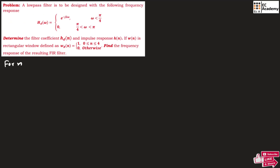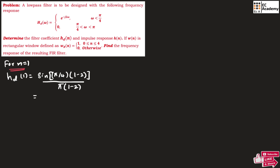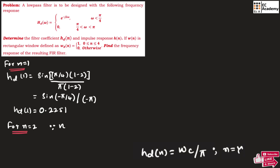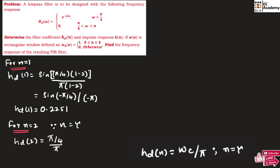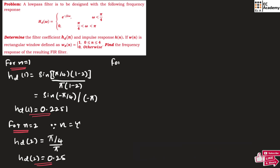For n equals 1: hd of 1 equals sin(pi/4 times (1 minus 2)) divided by pi times (1 minus 2), which equals sin(minus pi by 4) divided by minus pi. Therefore hd of 1 is approximately equal to 0.2251. For n equals 2, since n equals tau, we directly write hd of 2 equals pi by 4 divided by pi, so hd of 2 equals 0.25.